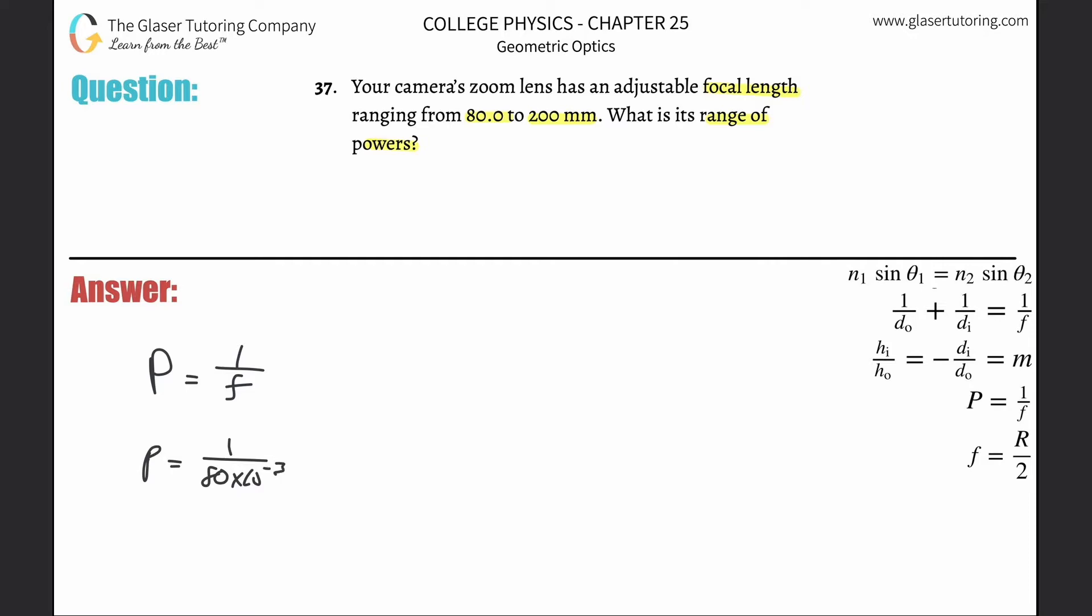We take that and plug it into the calculator: 1 divided by 80 times 10 to the minus 3. That works out to be about 12.5 one over meter, or aka diopters. So that's the first power.